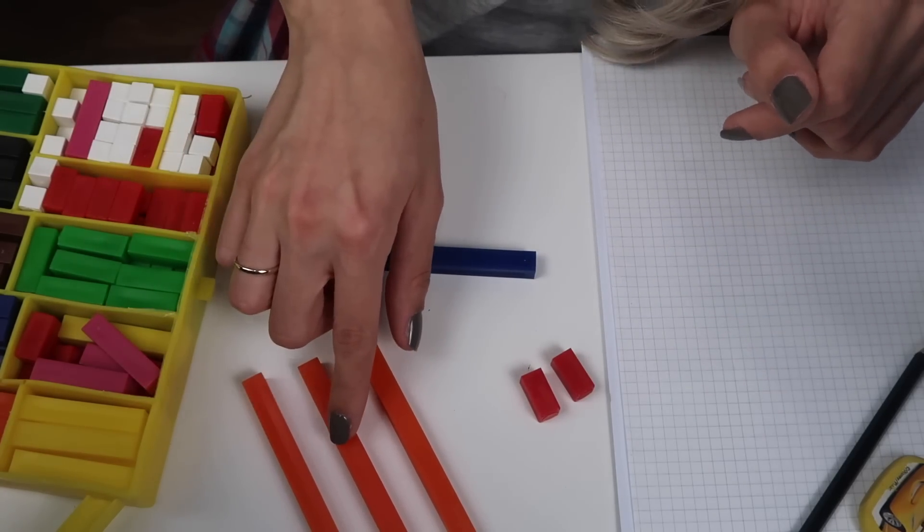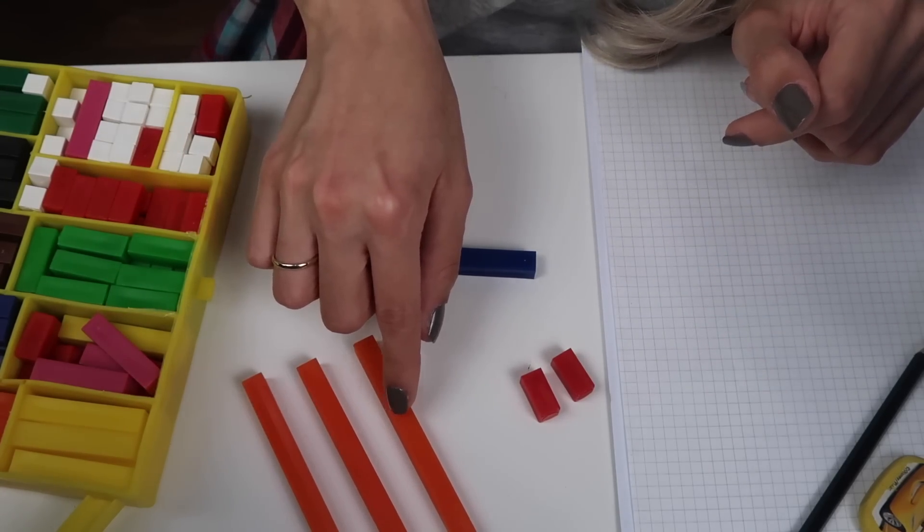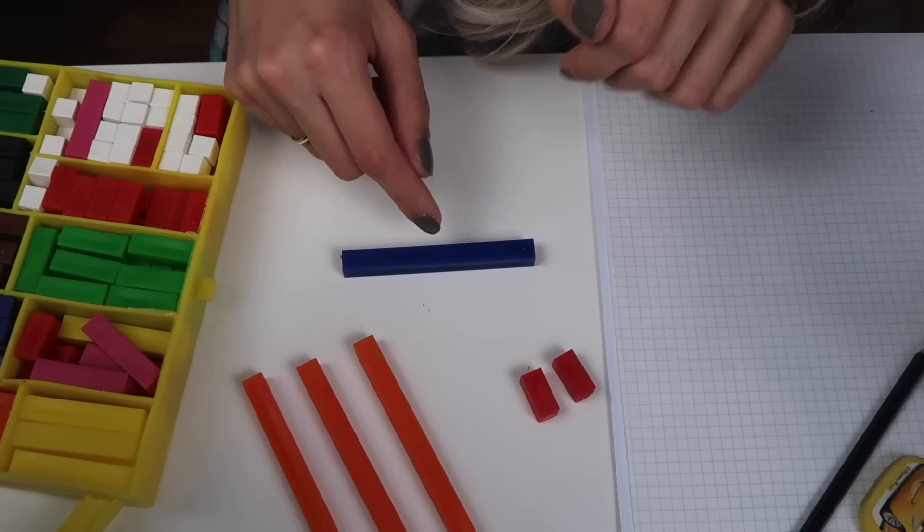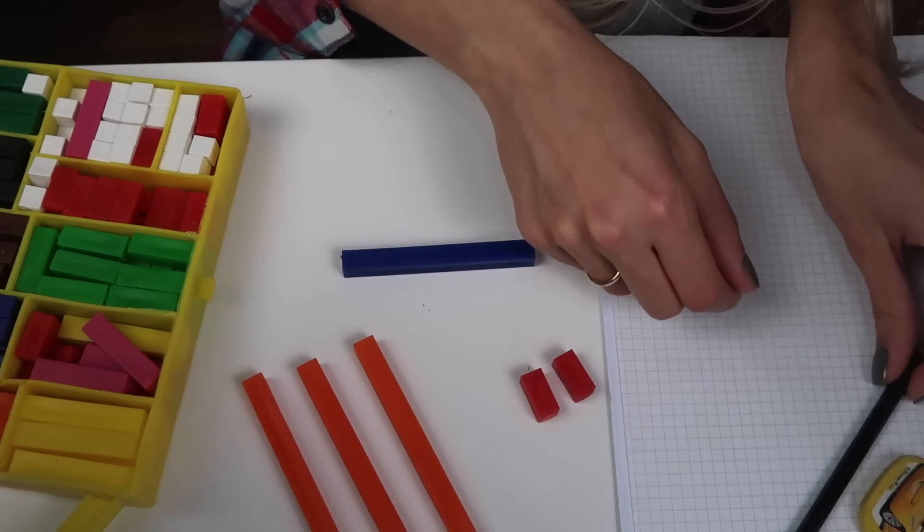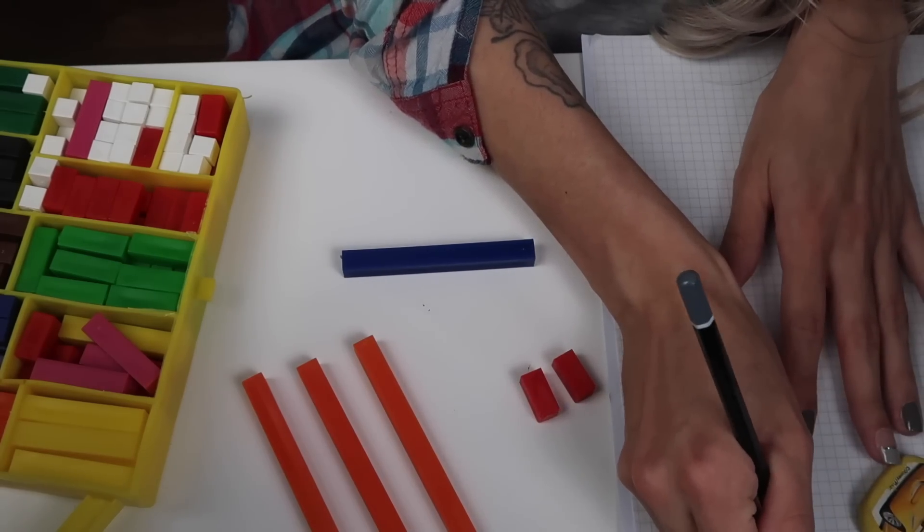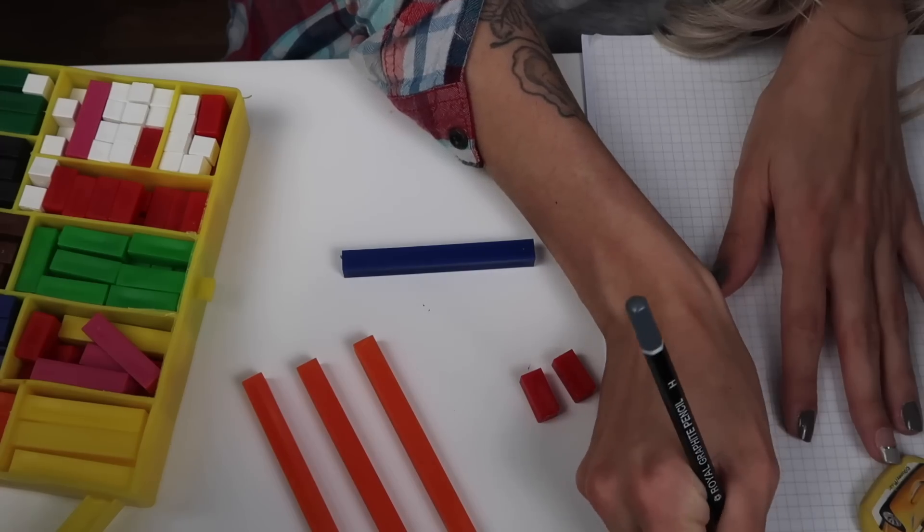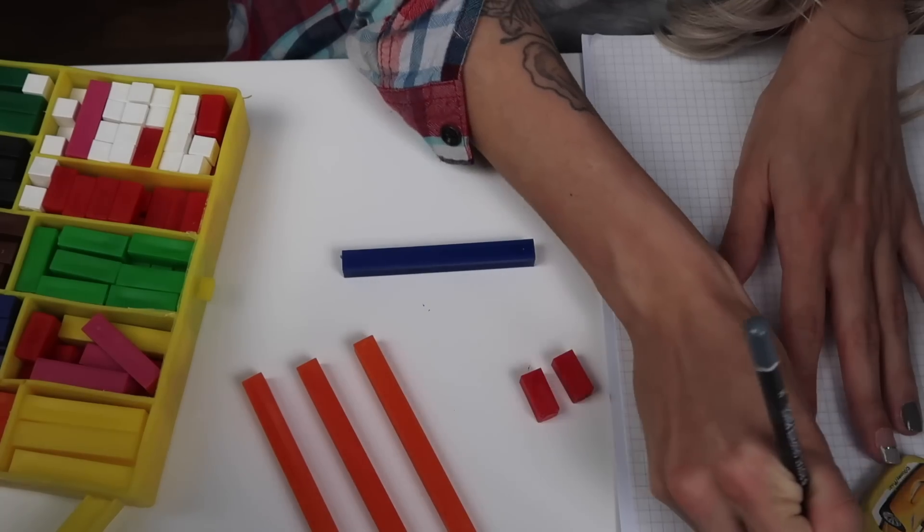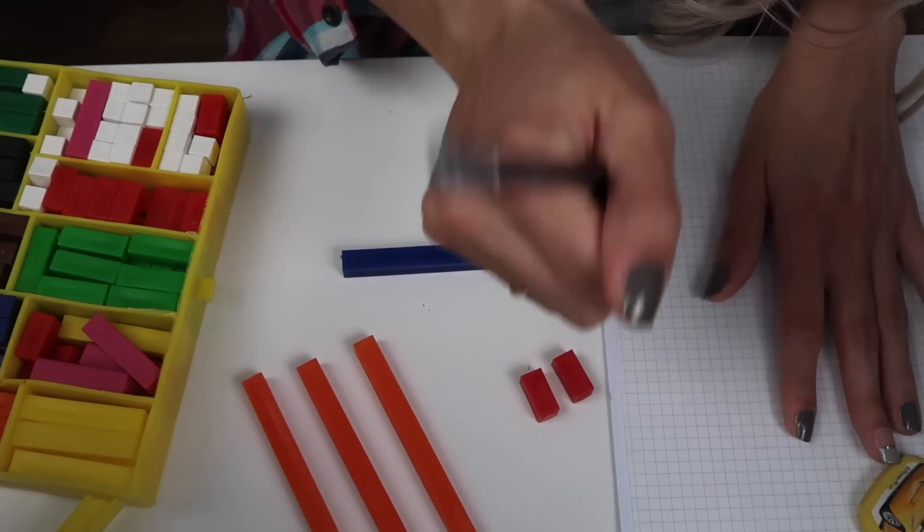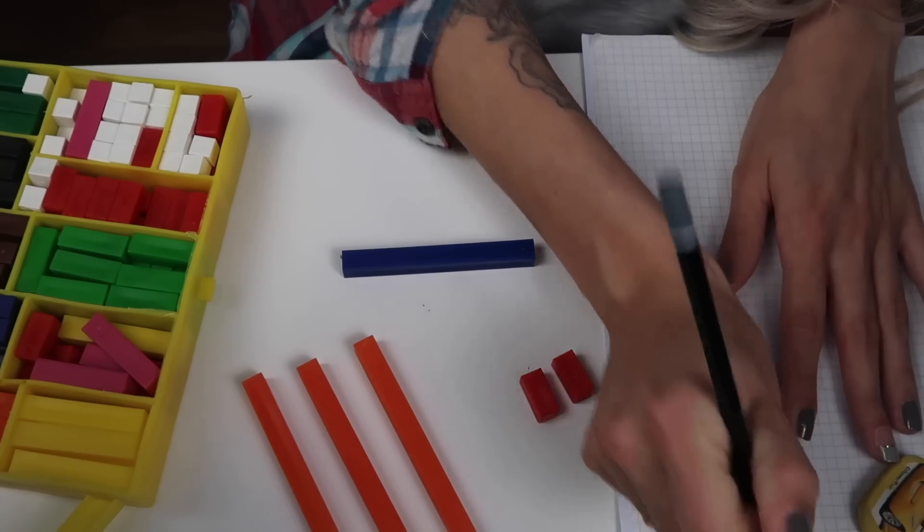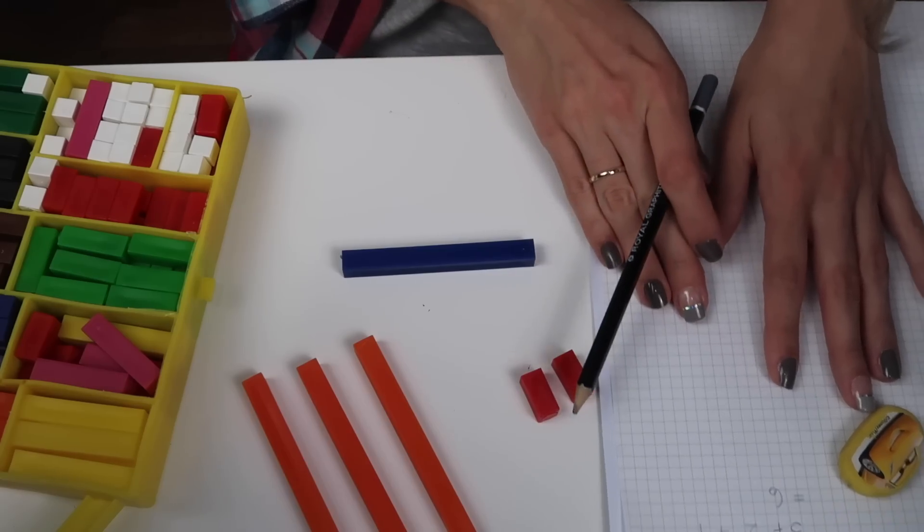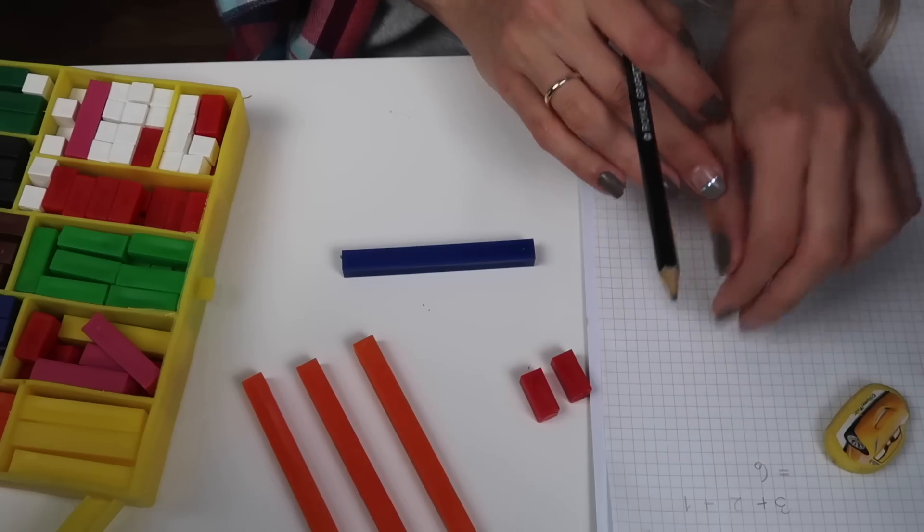Let's count together. 1, 2, 3, 4, 5, 6. Right? Okay. So, let's write that down. 3 plus 2 plus 1 equals how much was it? That's right. 6. So, 3 plus 2 plus 1 equals 6. Can you see? Good.